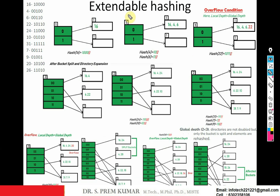Let us understand extendable hashing with an example. We will take sample data: 16, 4, 6, 22, 24, 10, 31, 7, 9, 20, and 26. I am writing their binary equivalent numbers here. The point to observe: always focus on the least significant bits, that is, the last bits.